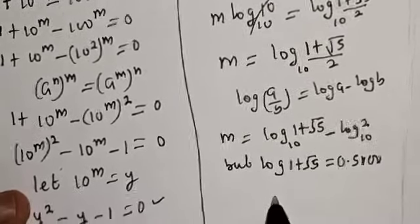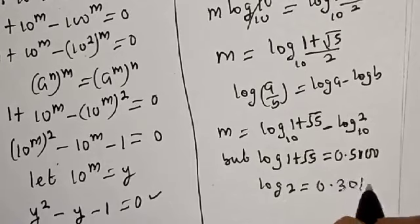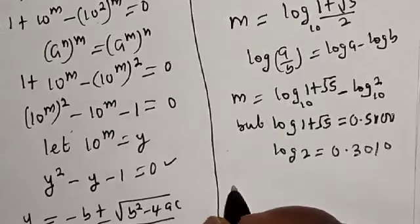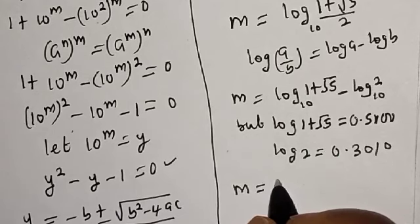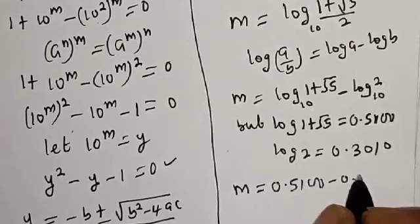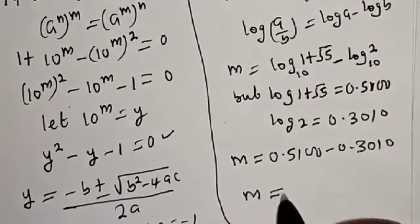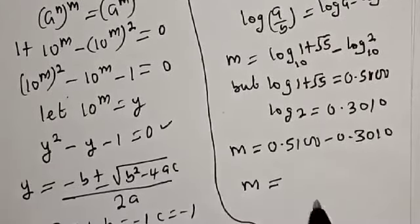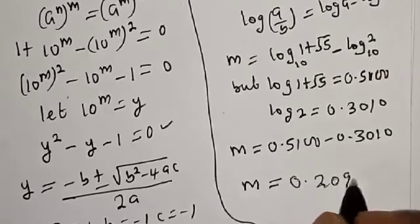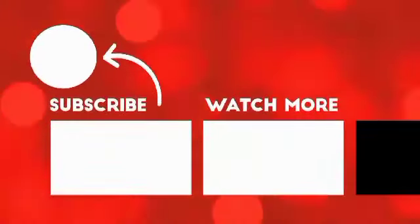Log 2 equals 0.3010. Therefore m equals 0.5100 minus 0.3010, which gives m approximately equal to 0.209. This is the final answer. Before you leave, like, share, comment and subscribe. Thank you, bye bye.